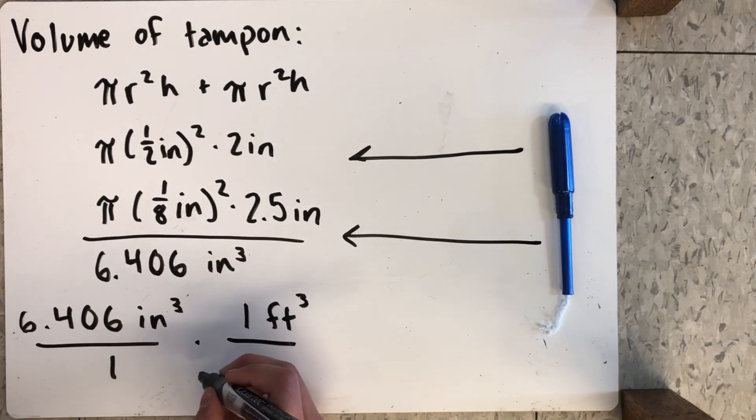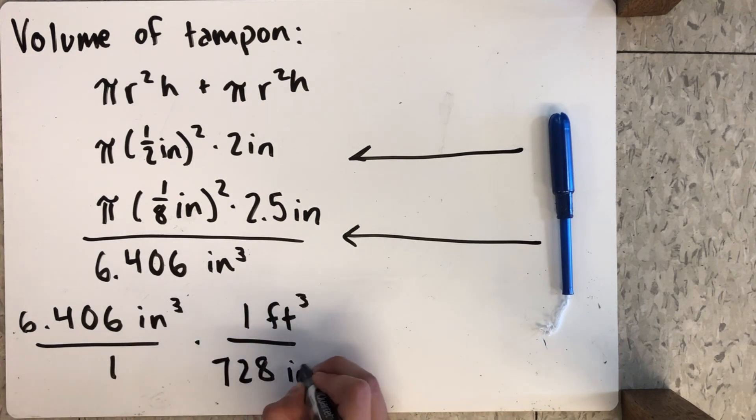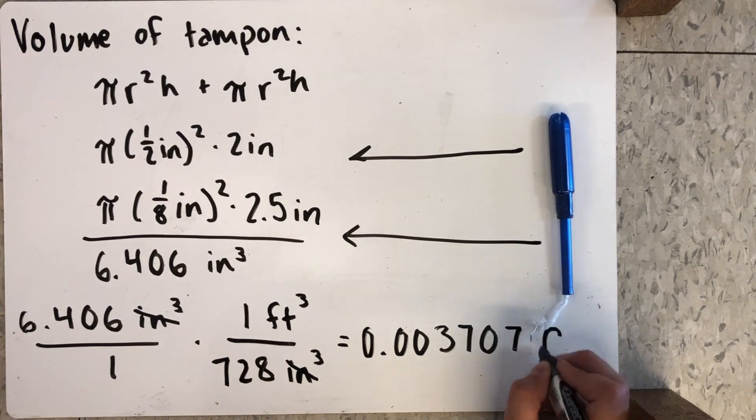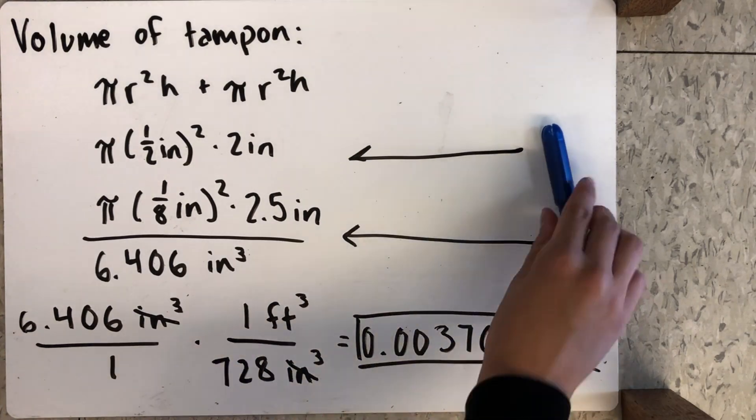To put this into the size of Stuy, we had to convert it to feet. Using the formula for feet, we found that a tampon has a volume of 0.003707 feet cubed.